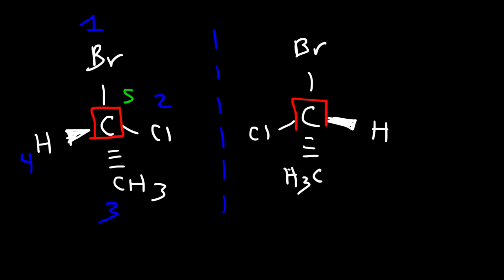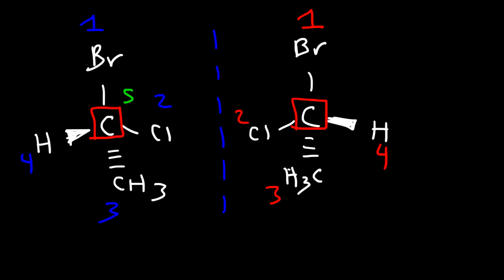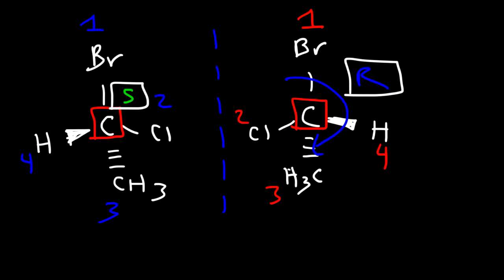For the chiral center on the right, this is number 1, 2, 3, and 4. Counting from 1 to 2 to 3, it appears to be S, but H is in the front so we reverse it, giving us the R isomer. As you can see, the configurations are opposite from each other.